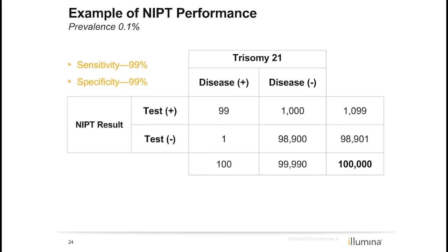Comparing that PPV calculation to one for the same patient if she opted for NIPT: the sensitivity and specificity are higher for NIPT compared to serum screening. Using a sensitivity and specificity of 99% each with the same prevalence, the PPV would be 9%. For a second patient who has had NIPT with a higher individual prevalence of Down syndrome — due to increased maternal age — using the same 99% performance data with a prevalence of 5%, the PPV rises to 83.2%.